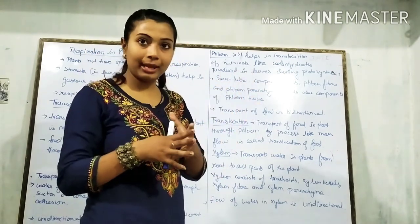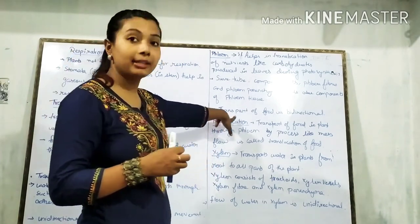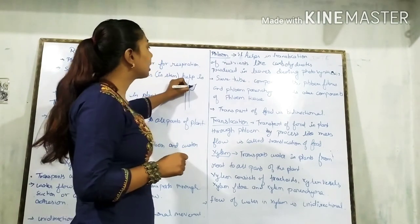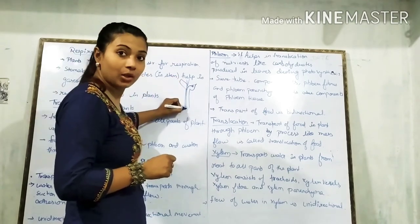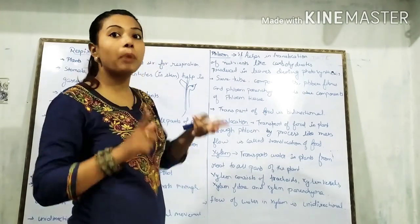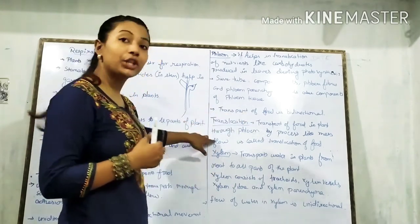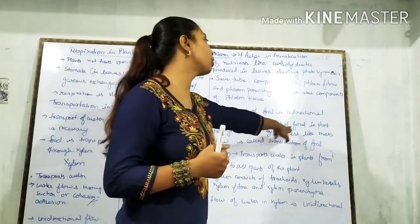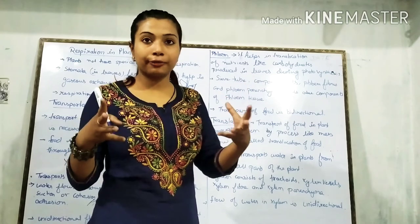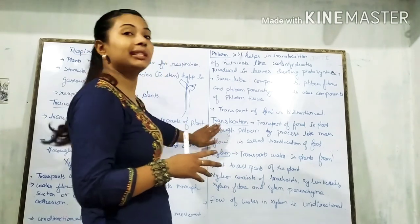Phloem is responsible for the translocation of food. Importantly, transport of food through phloem is bidirectional — meaning food can travel upward or downward. So if food is made in the leaves, it is also needed by the roots and stem. Bi means two — food transport occurs in both directions. Translocation refers to this movement of food through phloem.